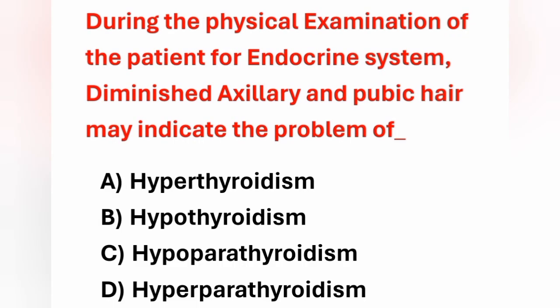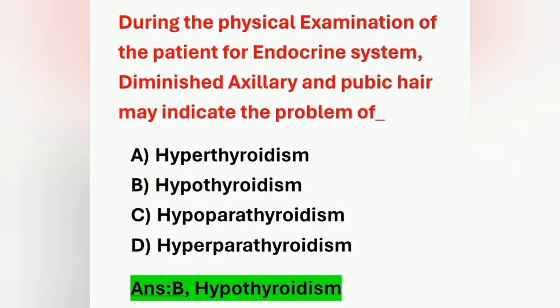Next question: during physical examination for the endocrine system, diminished axillary and pubic hair may indicate — option A: hyperthyroidism, option B: hypothyroidism, option C: hypoparathyroidism, option D: hyperparathyroidism. The answer is option B, hypothyroidism. In hypothyroidism, the patient may have diminished axillary and pubic hair.